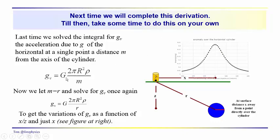We have the vertical component, but remember we now need to take the vertical component along this normal profile, which does get a little confusing. We let m equal r, and we want to get the variations of the vertical component of gravity as a function of X over Z, shown in the diagram. We'll take a look at that next time — thanks for joining us, see you then.